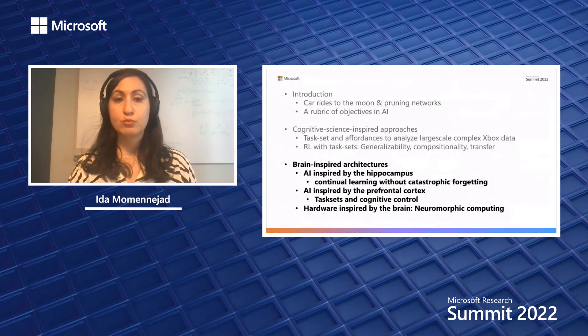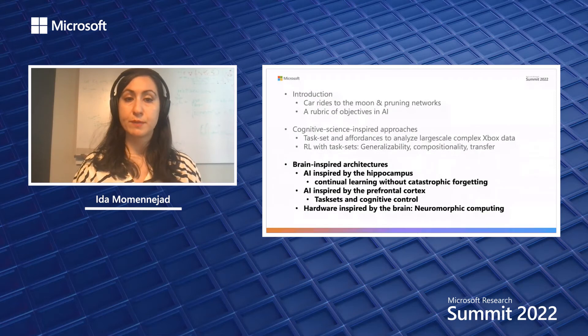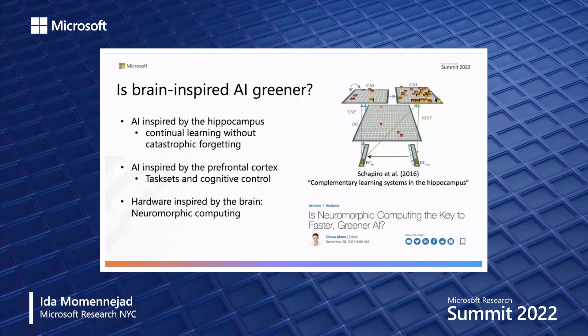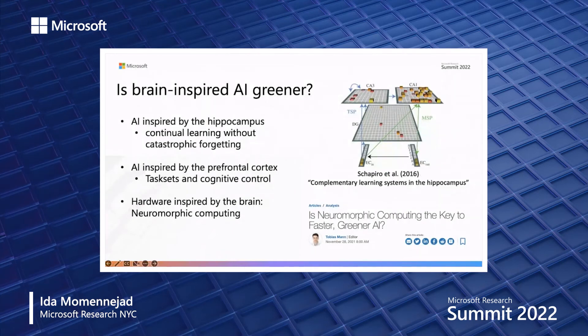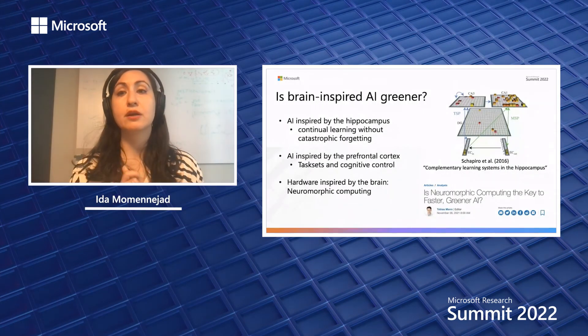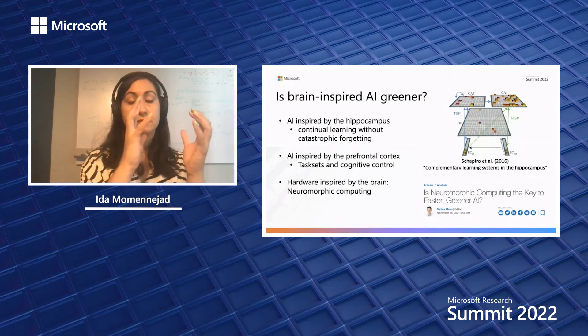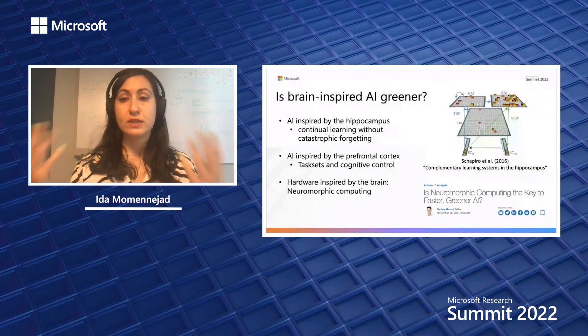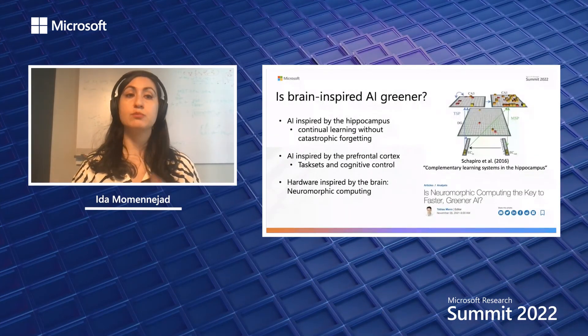The last thing I want to talk about is how brain-inspired architectures — for instance, architectures inspired by the hippocampus or the prefrontal cortex, as well as neuromorphic computing architectures — could allow us to improve. A brain-inspired AI inspired by the hippocampus could potentially do continual learning without catastrophic forgetting. My colleague Anna Shapiro, a professor at Penn, showed that simulating the hippocampus architecture allowed for pattern separation and completion — the same way the hippocampus does — through complementary learning systems capable of both clustering and associative learning as well as separating things, creating more efficient architectures.